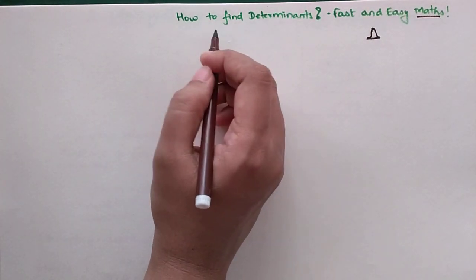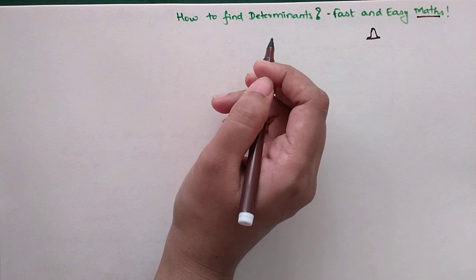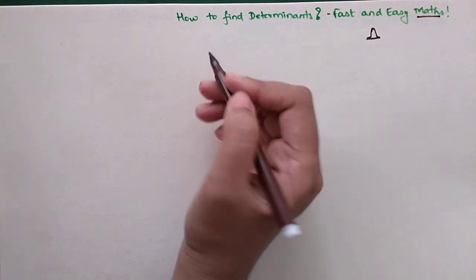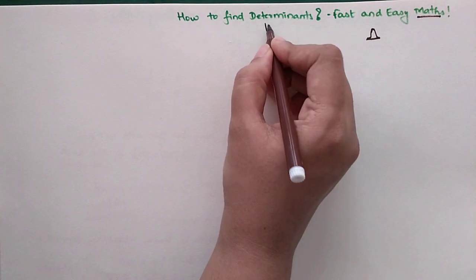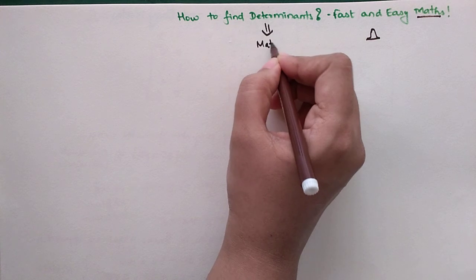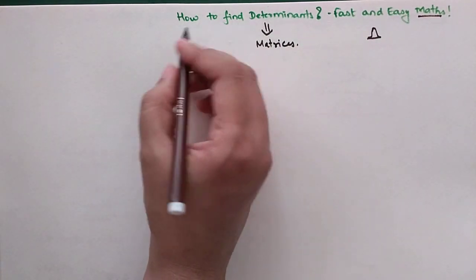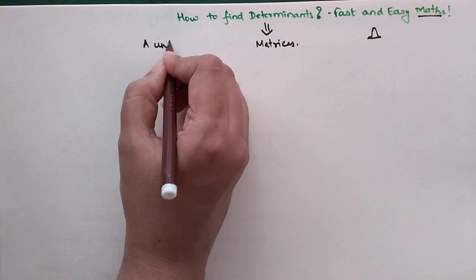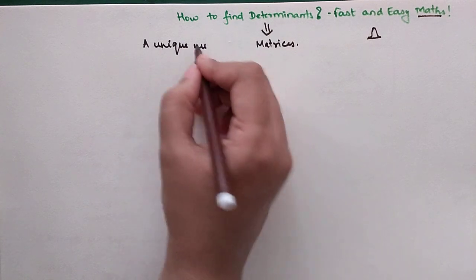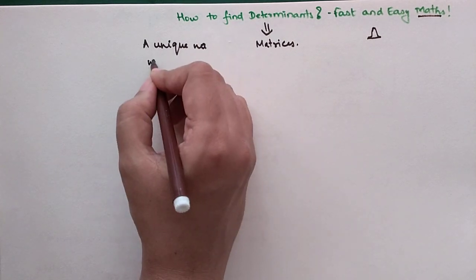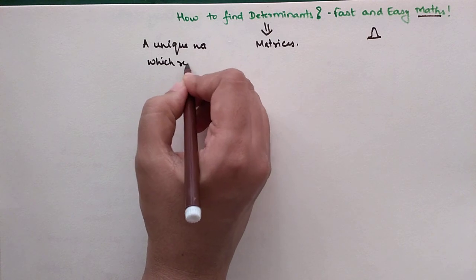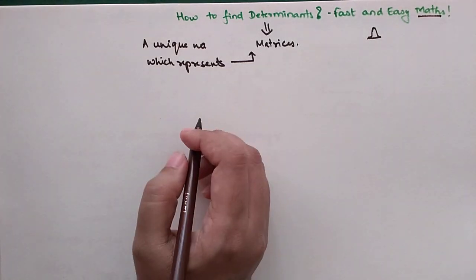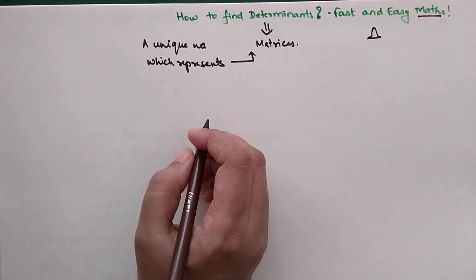Today we are going to understand how to find determinants. The topic of determinants is closely related to the topic of matrices. The determinant is nothing but a unique number which represents a matrix.